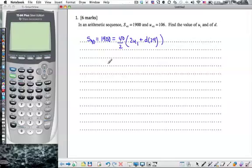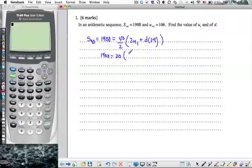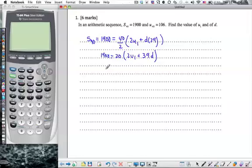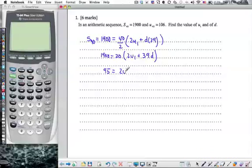Let's tidy this equation up so we can get it all nice and neat. So if we do 1900 equals 20, parentheses 2u1 plus 39d. I like to keep my numbers small, so I'm going to divide by 20, which will give me 95 equal to 2u1 plus 39d.